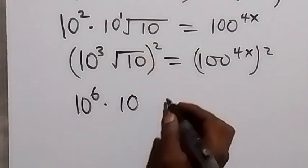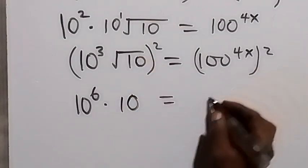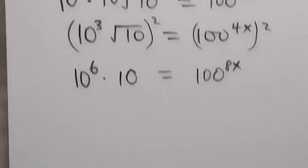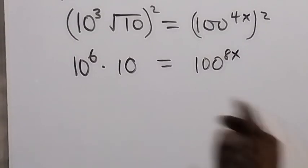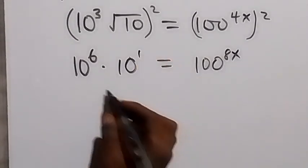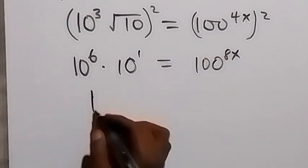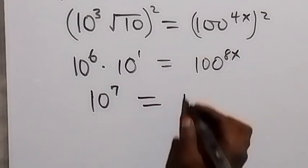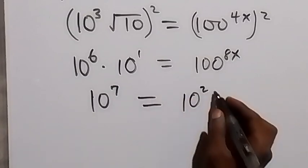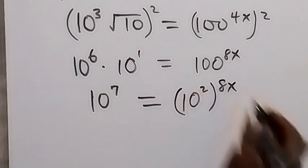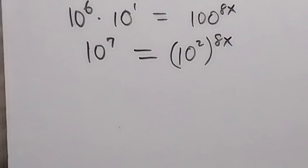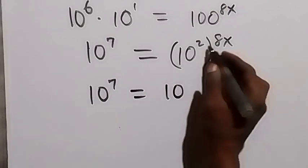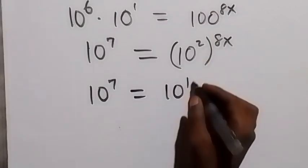Squaring the square root gives us 10, which is 10 raised to power 1. So combining, we get 10 raised to power 7 on the left-hand side. On the right-hand side, this power multiplies and gives us 100 raised to power 16x, which equals 10 raised to power 16x.